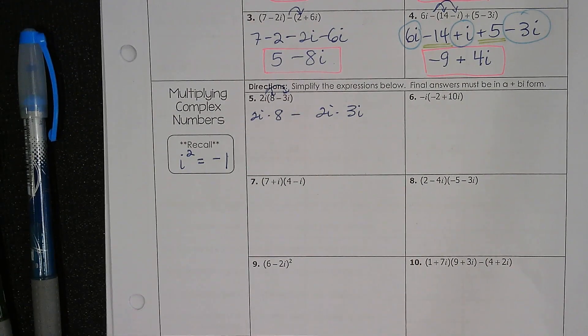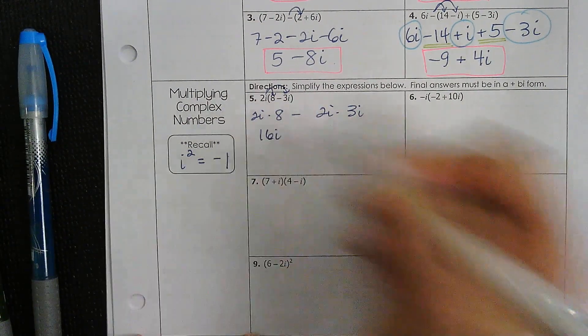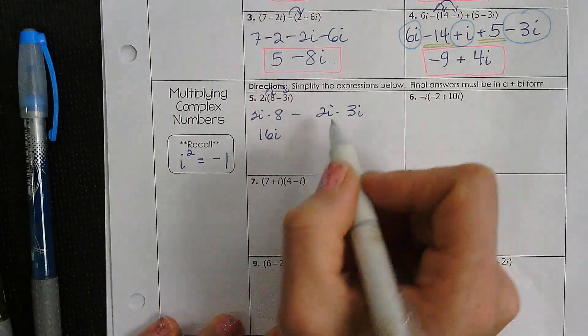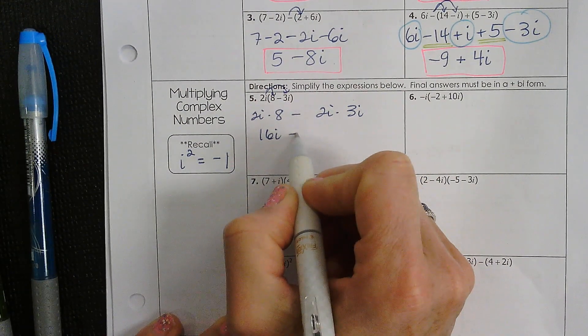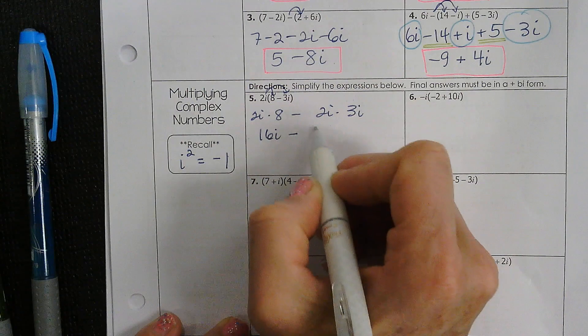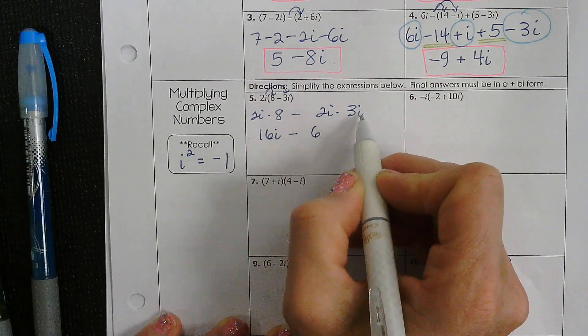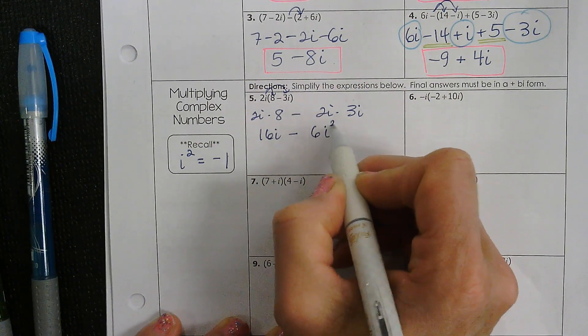Well, 2i times 8 is 16i. And then you're going to subtract 2 times 3 is 6. What is i times i? It's i squared.